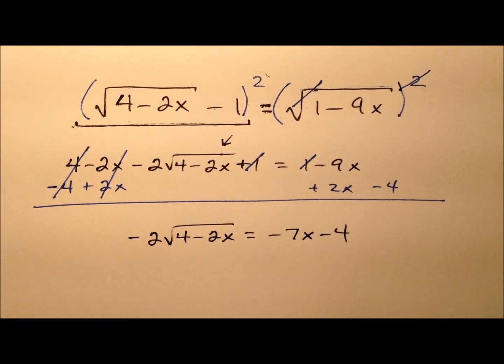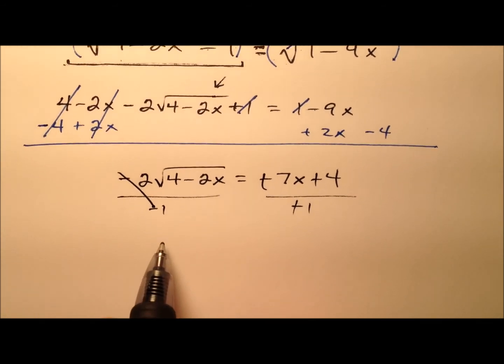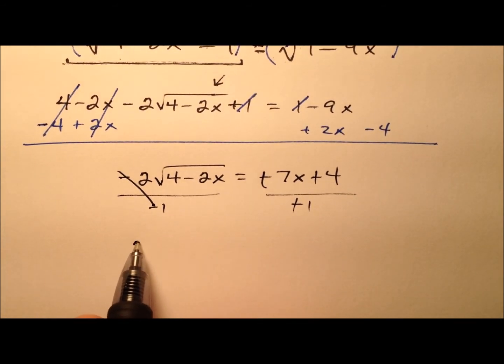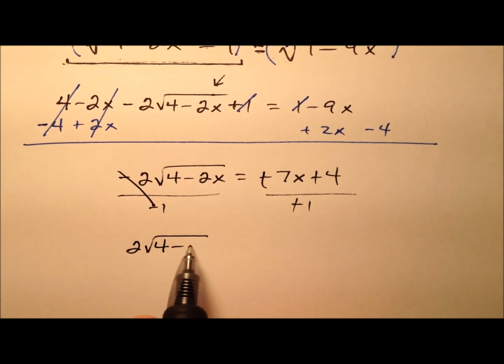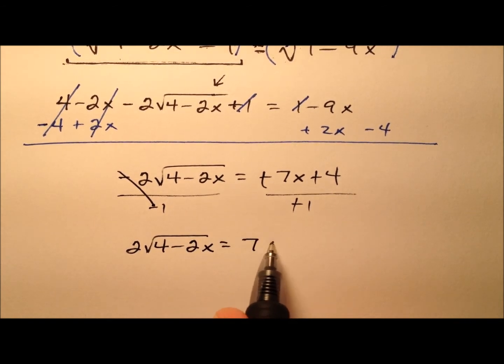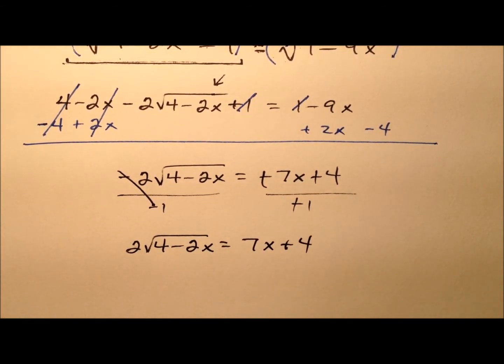A lot of negatives everywhere. So why don't we just divide both sides by that negative so we can cancel this negative, this negative, and this negative as well. That might be a little easier to work with. So 7x plus 4.